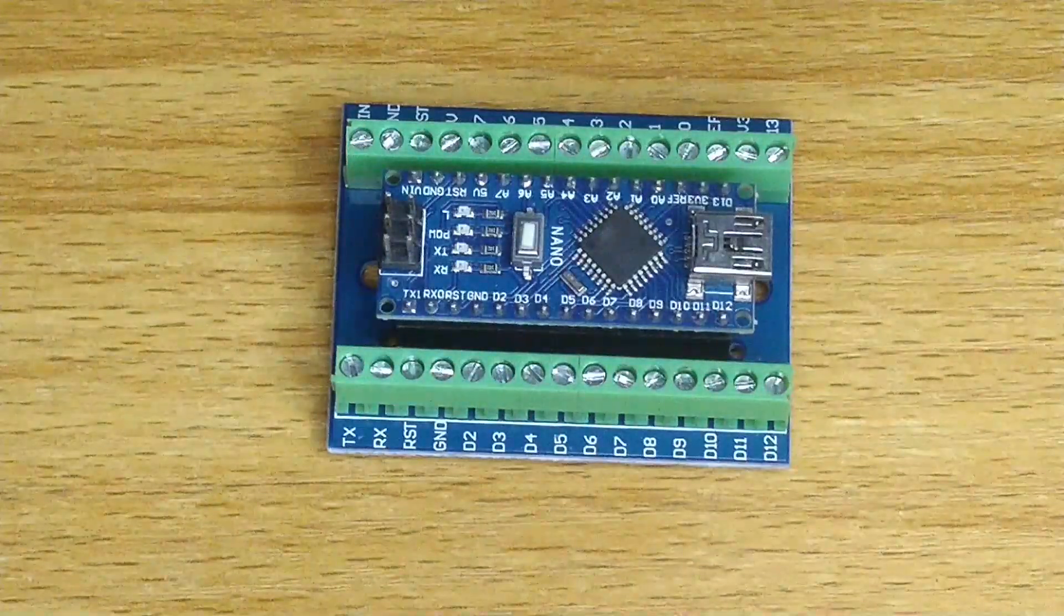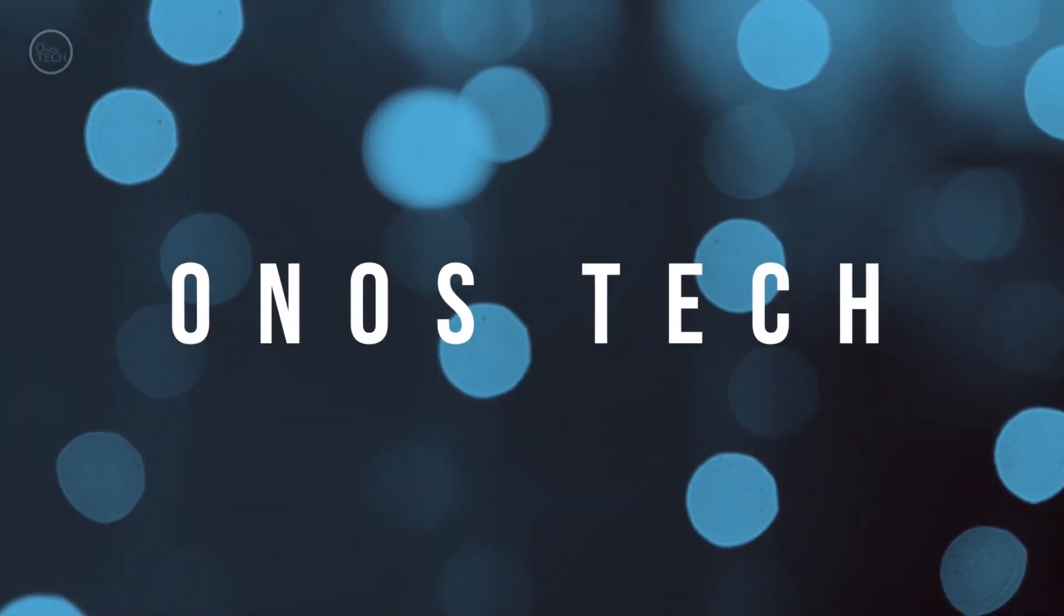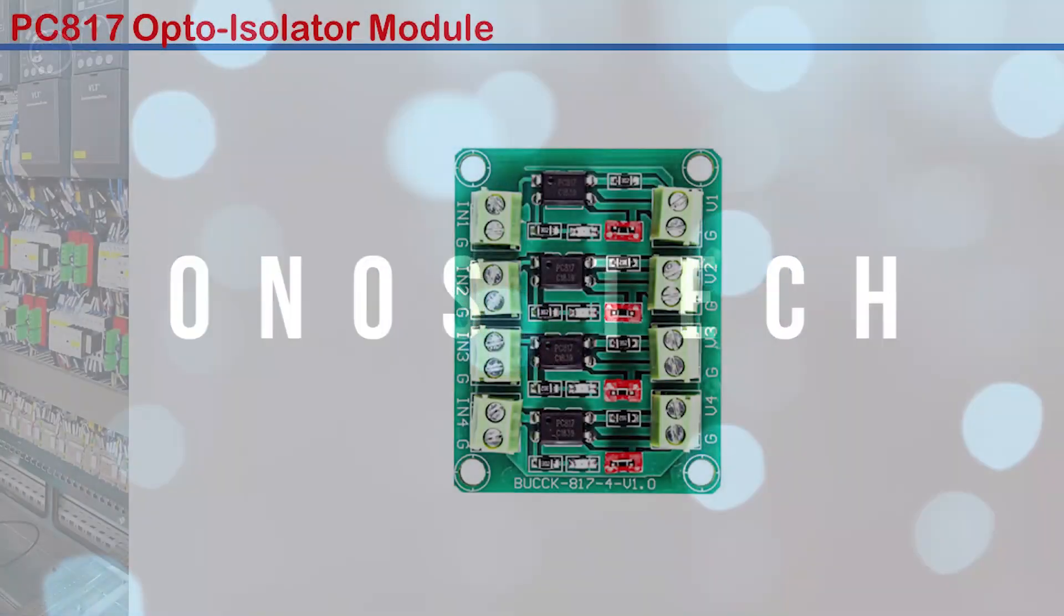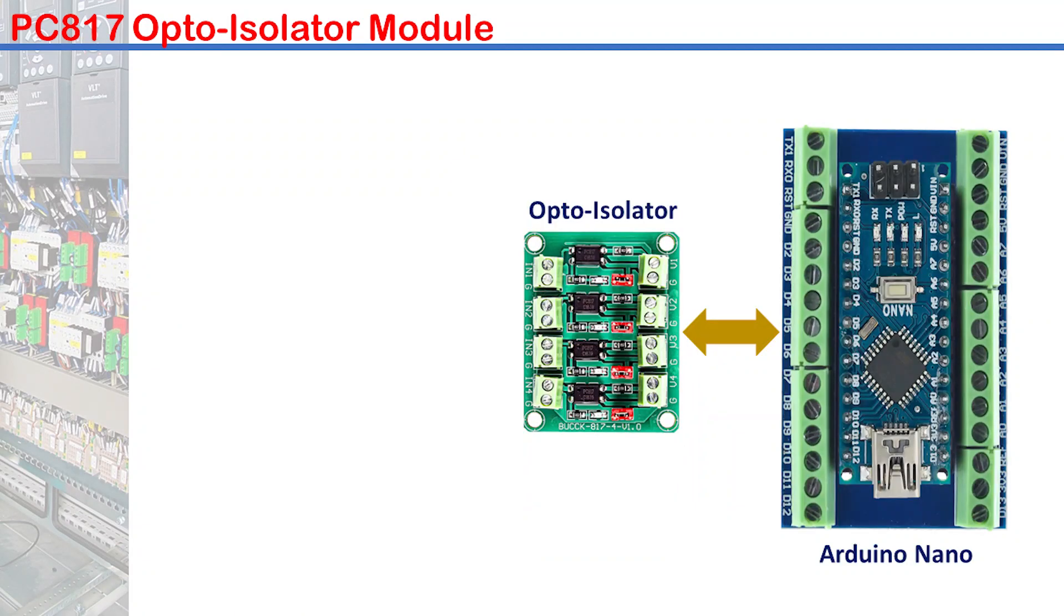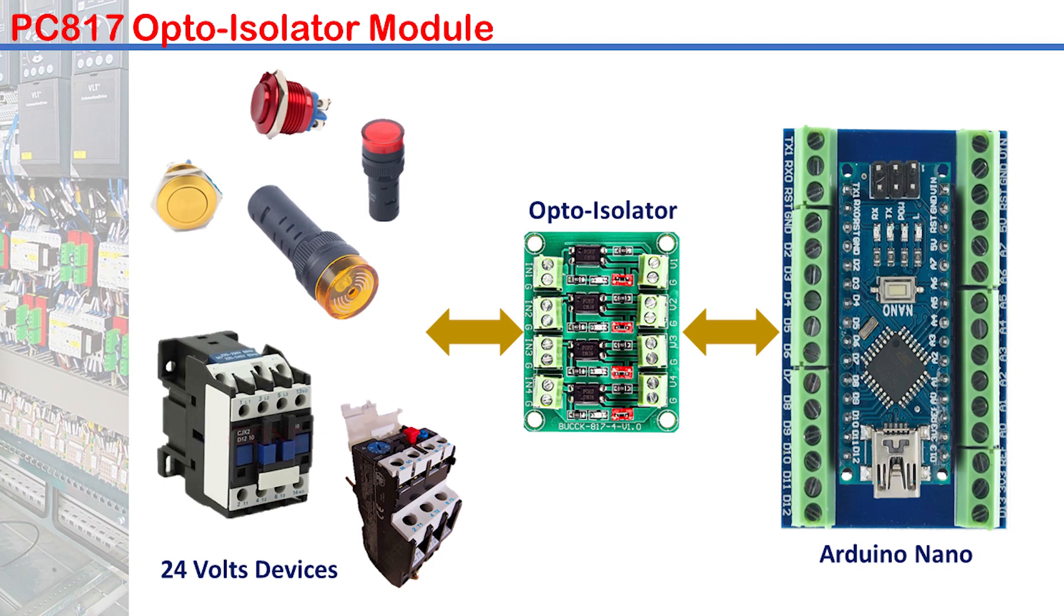But wait, Arduino input-output pins work with 5V maximum. The PC817 opto-isolator module will interface the Arduino Nano 5V input-output with the industrial 24V devices.